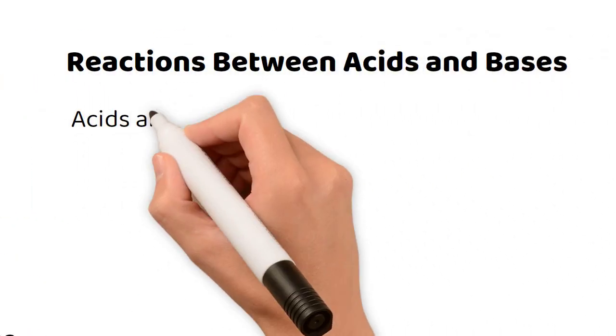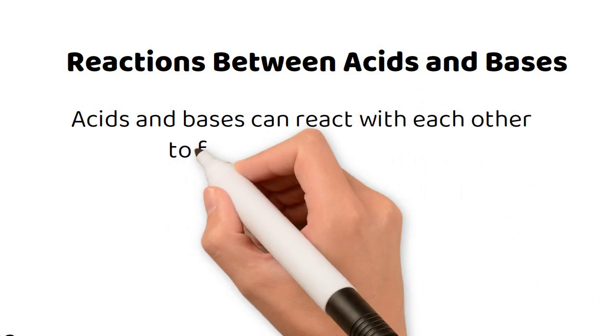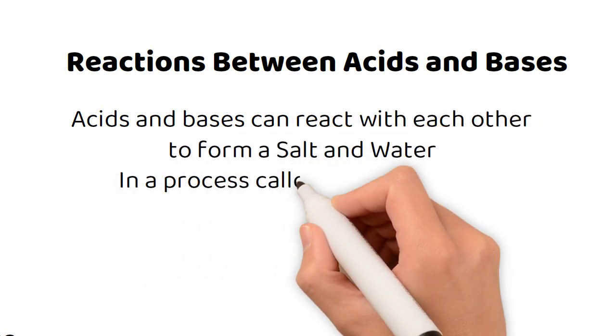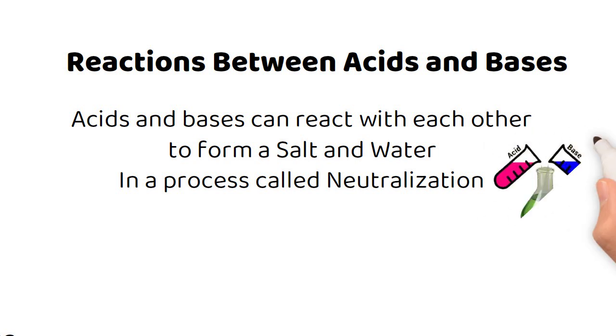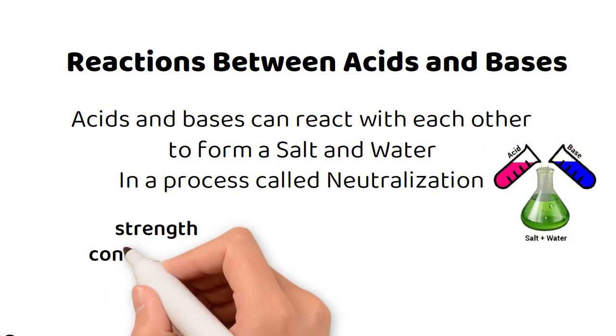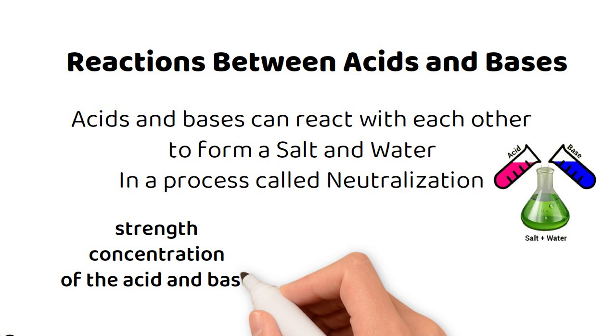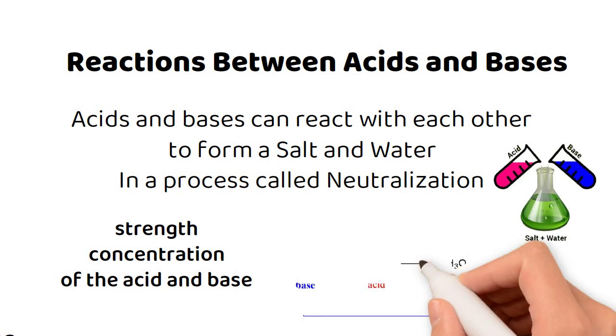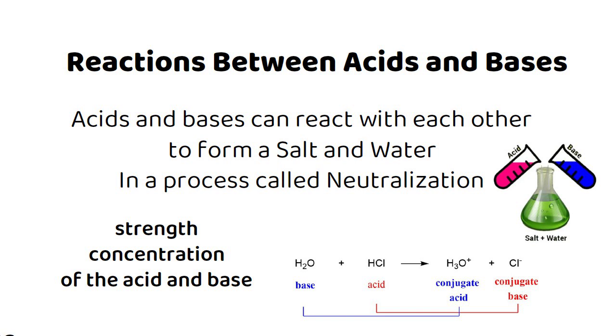Reactions between acids and bases. Acids and bases can react with each other to form a salt and water in a process called neutralization. The pH of the solution after neutralization depends on the strength and concentration of the acid and base. Acid-base reactions can also involve the transfer of protons from the acid to the base, resulting in the formation of a conjugate acid or base.